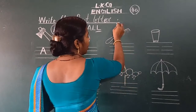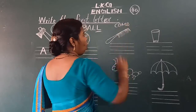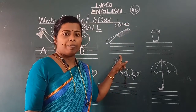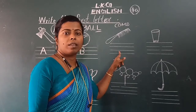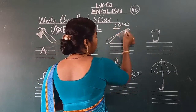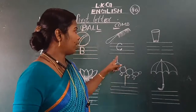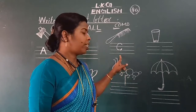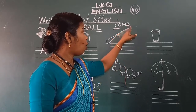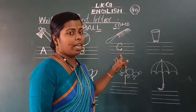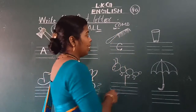And see the next picture. What is this? This is a comb. Okay? Tell me, which letter comes here? C. Very good. C for comb. C-O-M-B. Comb ka pehla letter C hai. C likha hai.